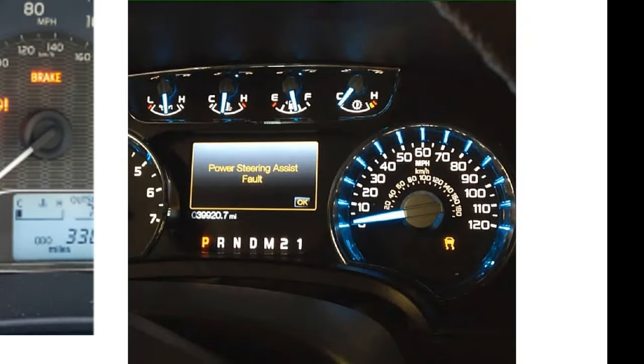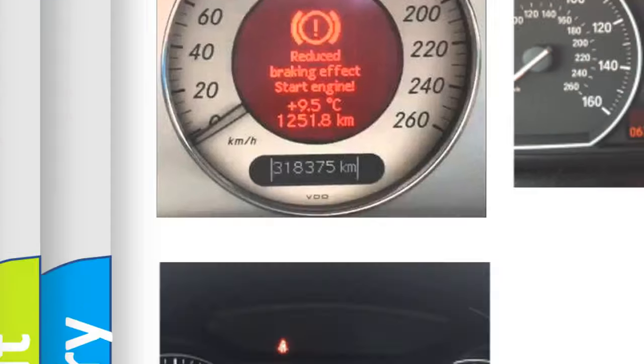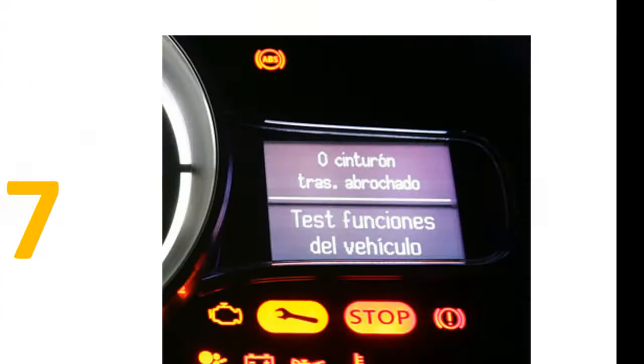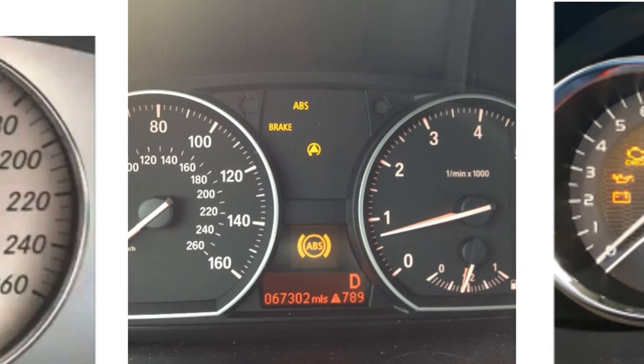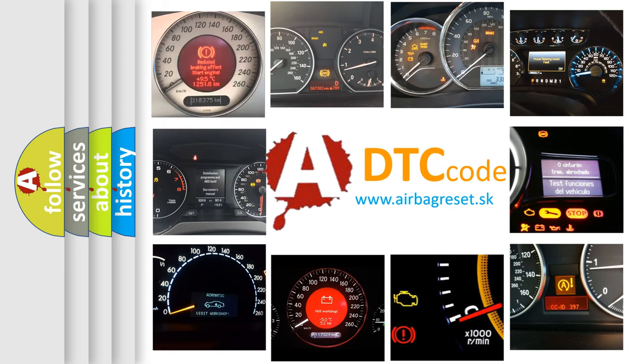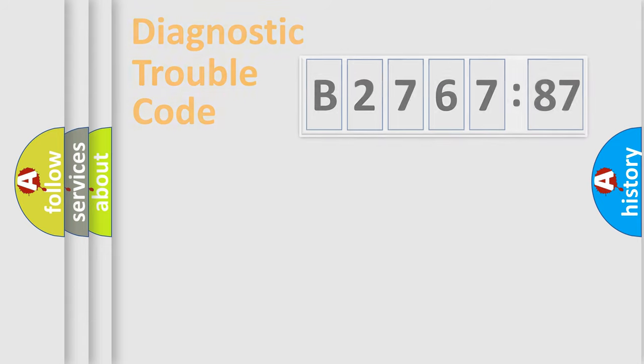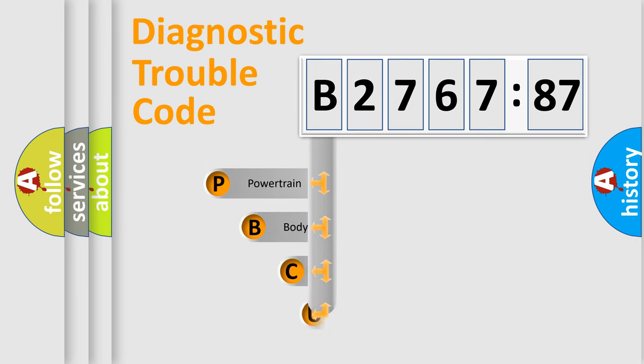Welcome to this video. Are you interested in why your vehicle diagnosis displays B2767:87? How is the error code interpreted by the vehicle? What does B2767:87 mean, or how to correct this fault? Today we will find answers to these questions together. Let's do this.